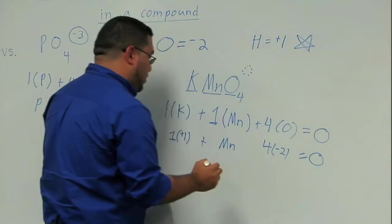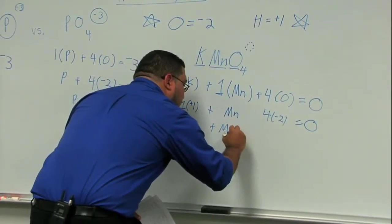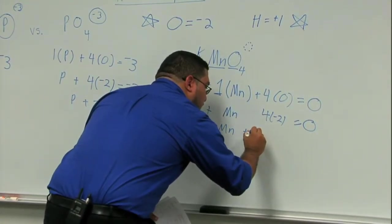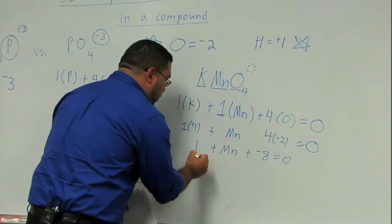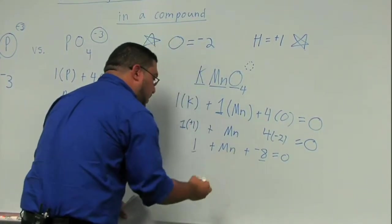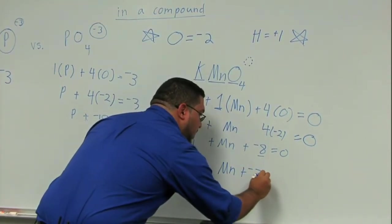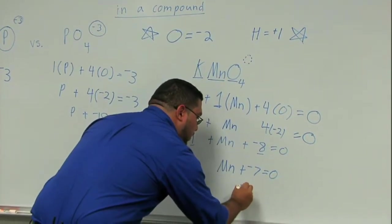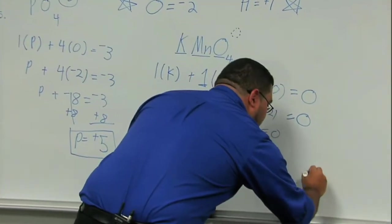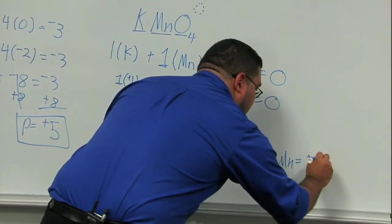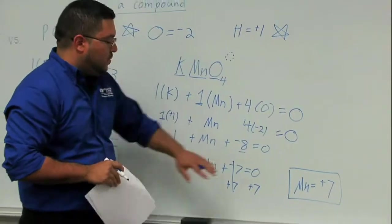And last but not least we have our one manganese here. So now we can go ahead and approach this again like a regular math problem and I can say that I have one plus manganese, my unknown, plus a negative eight is equal to zero. Before you start bringing stuff over add like terms. We have a one here. We have an eight here. So I'll take care of that first. So I'll say manganese plus a negative seven is equal to zero. Bring it over to the other side and sure enough we get our final solution for the oxidation state of manganese is equal to a positive seven.